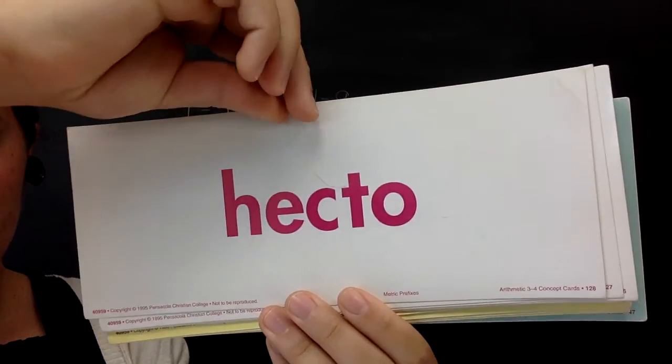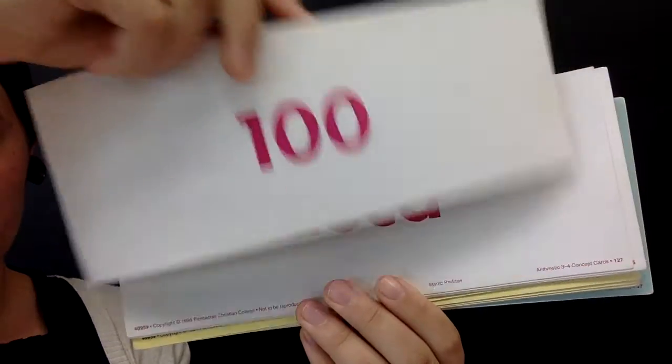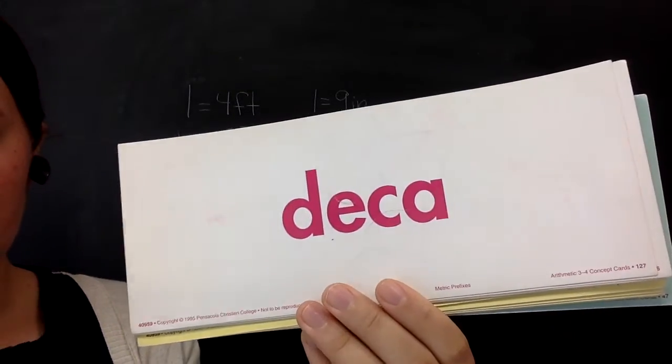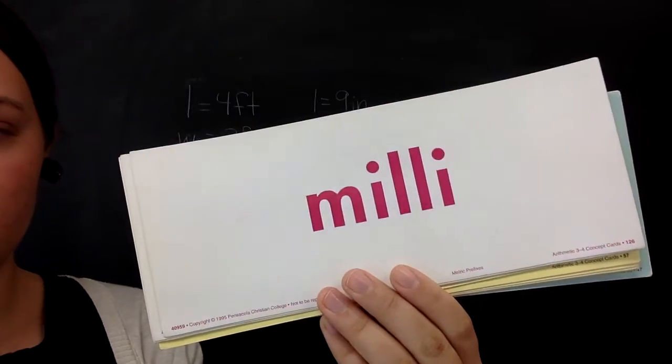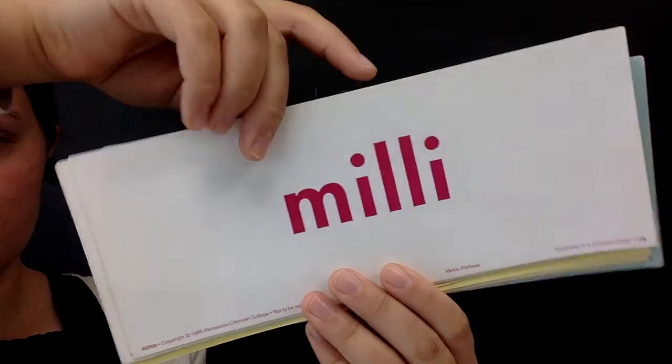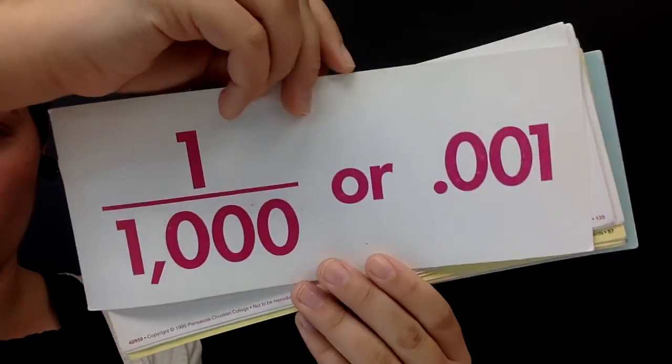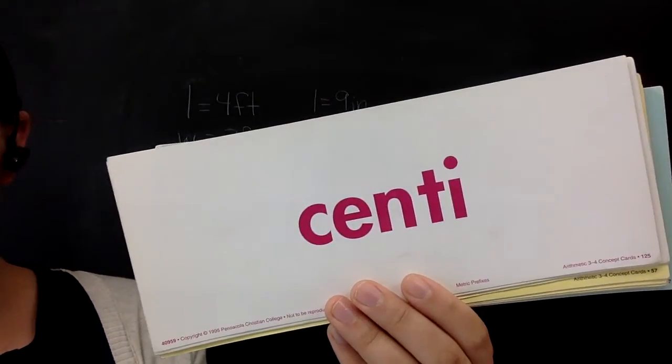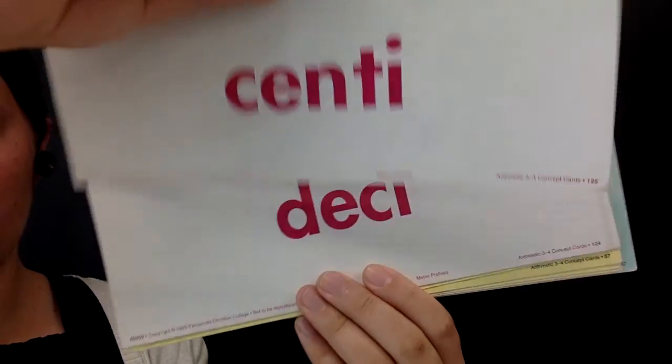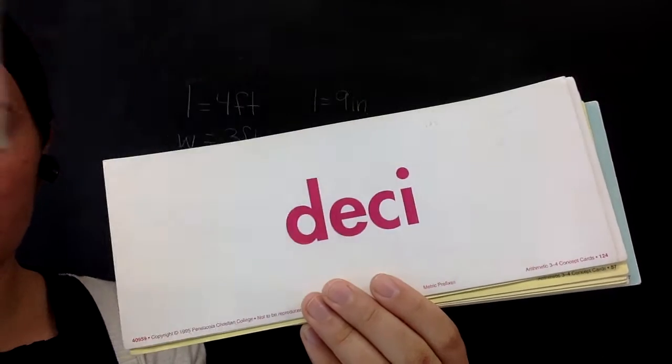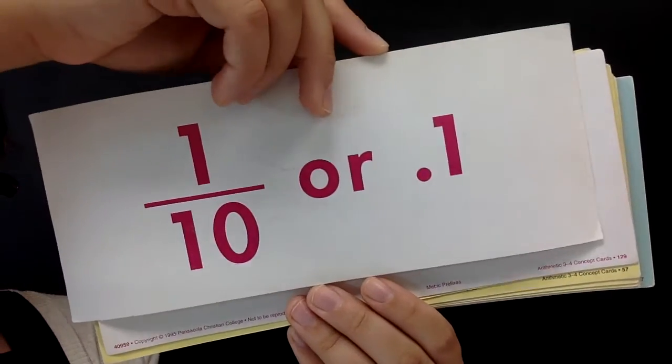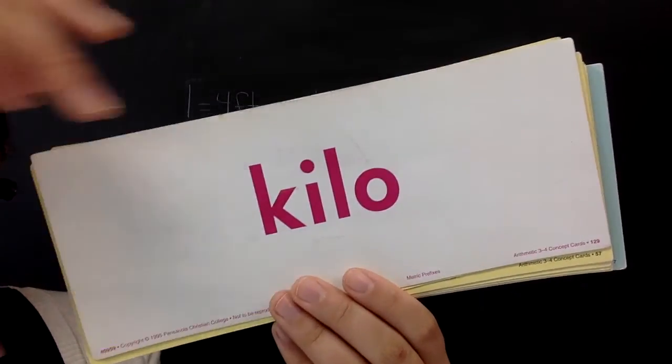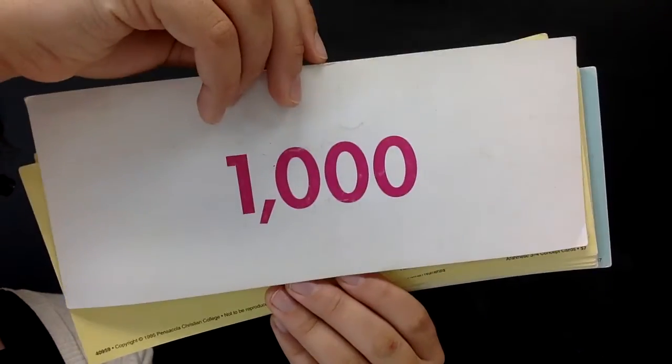Hecto means 100. Deca means 10. Milla means 1,000. Centa means 100. Deca means 1,10. Kilo means 1,000.